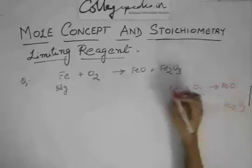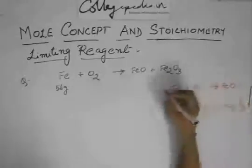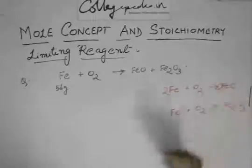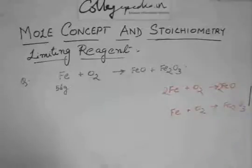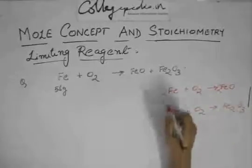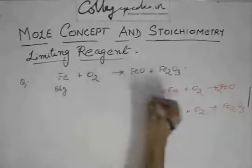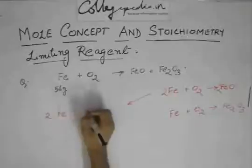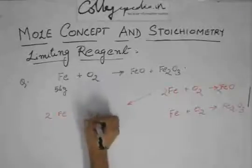So first let us proceed with this reaction. First balance this reaction, it would be 2Fe plus O2 gives 2FeO. So here in this reaction, 2 moles of Fe react with 1 mole of oxygen.